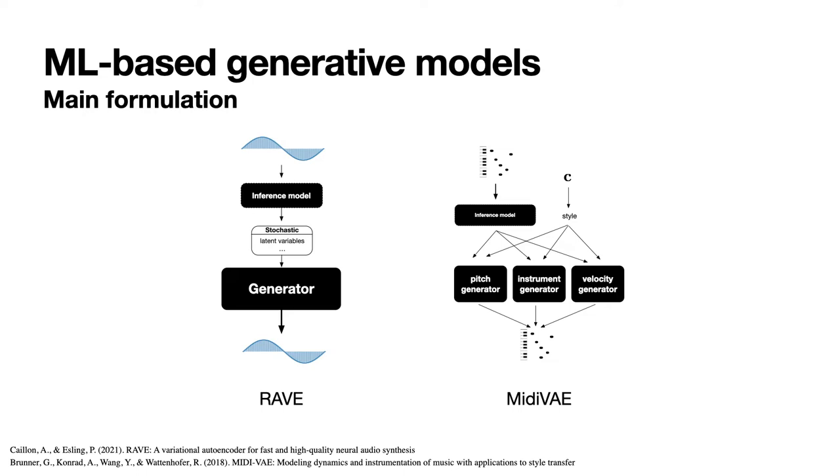For example, the RAVE model, based on an encoder-decoder architecture, infers high-level synthesis parameters that it can invert back to recover the original waveform.